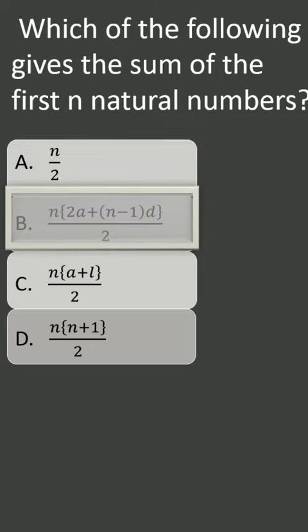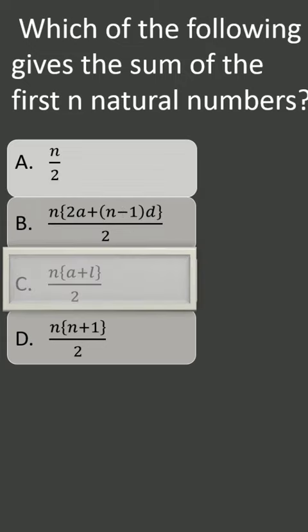Here in option B, sum of numbers when first term and the common difference are given. It can be used because common difference is 1 here, but it takes a long route to find the answer.